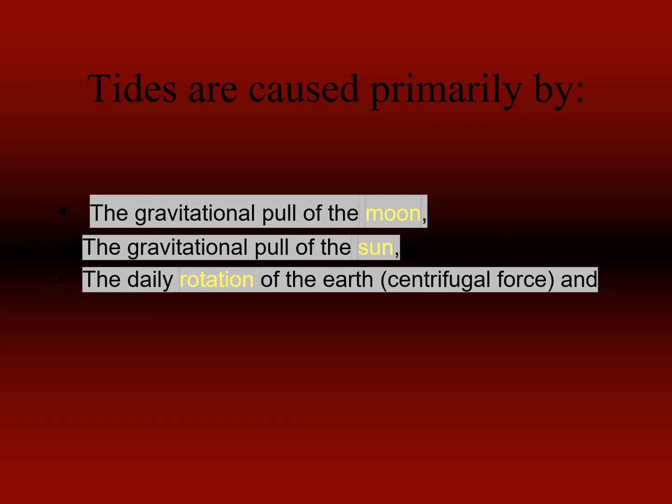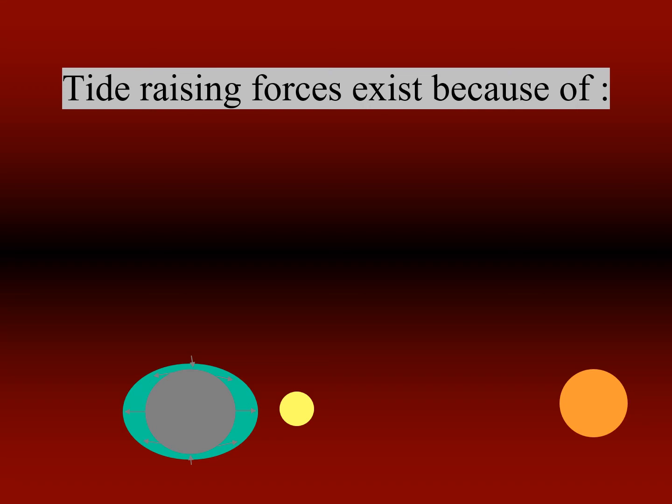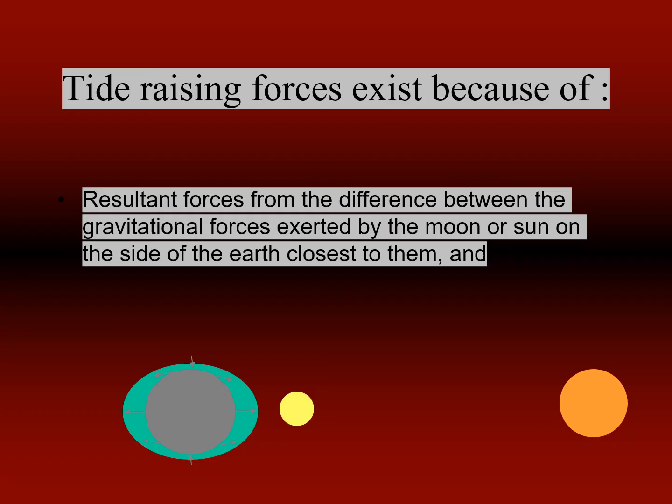Tide changes normally occur due to the gravitational pull of the moon and the sun. The earth experiences a gravitational force from both the moon and the sun, and depending on the position of the moon and the sun, there are tides called spring tides and neap tides. Because of the gravitational pull of the sun and the moon, the water on the earth's surface experiences a force that results in the tides.